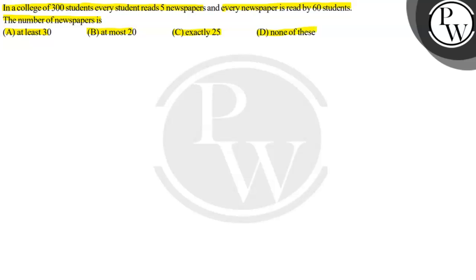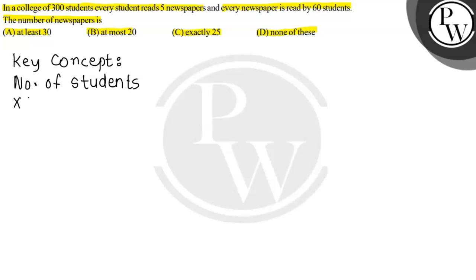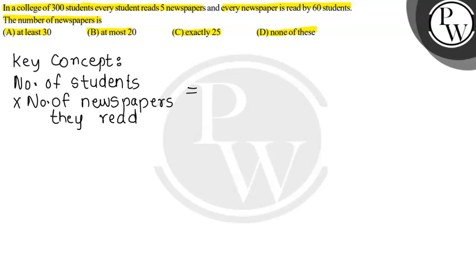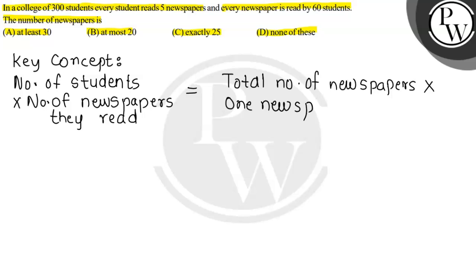Students into the number of newspapers they read will be equal to the total number of newspapers into how many students read one newspaper. Here is our key concept to check — key concept: number of students into number of newspapers they read is equal to total number of newspapers into the number of students who read a certain newspaper.